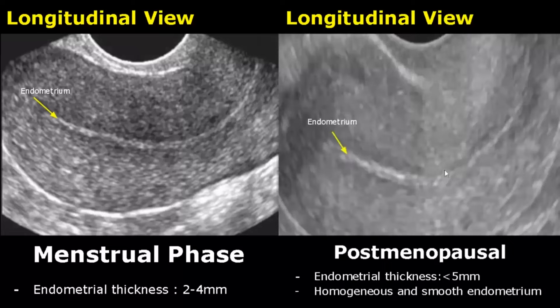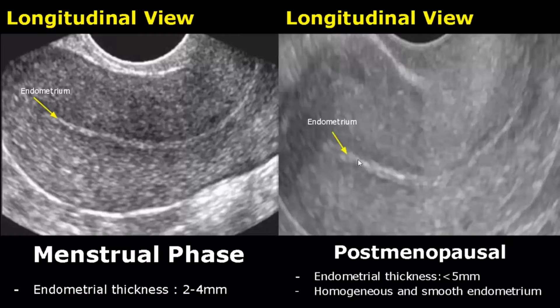In a postmenopausal woman, there are no more menstrual cycles, so the endometrial thickness is usually less than 5 mm and it will appear smooth and homogeneous.